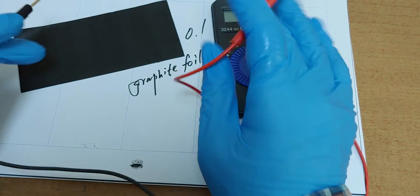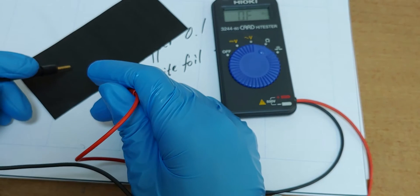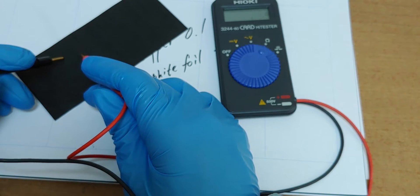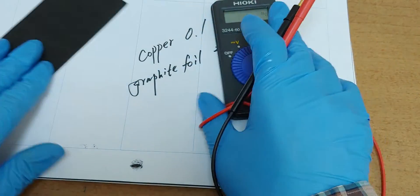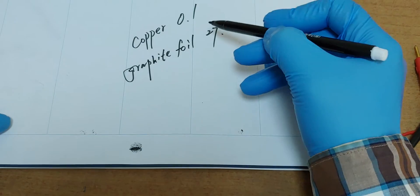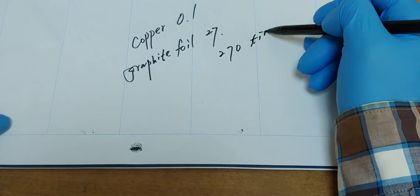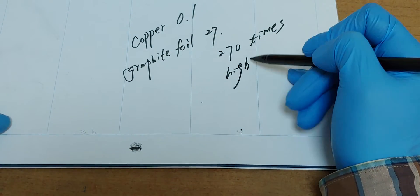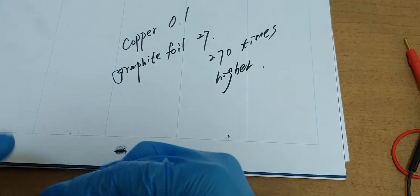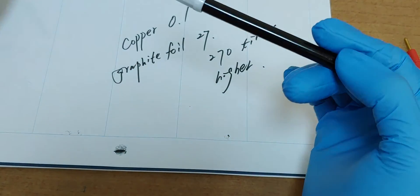23. Too high. 270 times higher, so in this stage it is not useful. Too high.